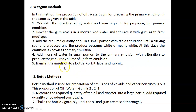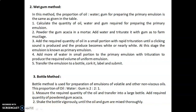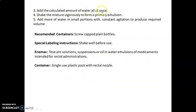Then add more water in small portions to the primary emulsion with trituration to produce the required volume of uniform emulsion. Transfer the emulsion to a bottle, cork it, label it, and submit. The bottle method is used for the preparation of emulsions of volatile and other non-viscous oils, with a proportion of oil to water to gum of 2:2:1. Measure the required quantity of oil and transfer into a large bottle, add powdered gum acacia, shake vigorously, add calculated water all at once, shake to form a primary emulsion, then add more water in small portions with constant agitation. The recommended container is a screw-capped plain bottle with the special labeling instruction: 'Shake well before use.'